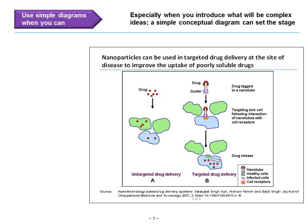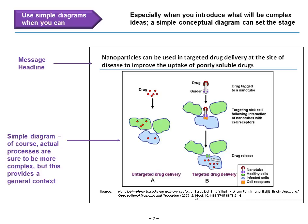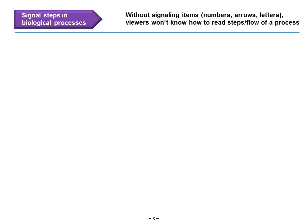Next, use simple diagrams when you can, especially when you introduce what will be complex ideas down the road — a simple conceptual diagram can set the stage. In this example, we have a message headline: 'Nanoparticles can be used in targeted drug delivery at the site of disease to improve the uptake of poorly soluble drugs.' We then have a very simple diagram comparing untargeted drug delivery with targeted drug delivery. The actual process may be a lot more complex, but this provides good general context to the overall subject matter of your presentation. Simple diagrams can be very powerful.